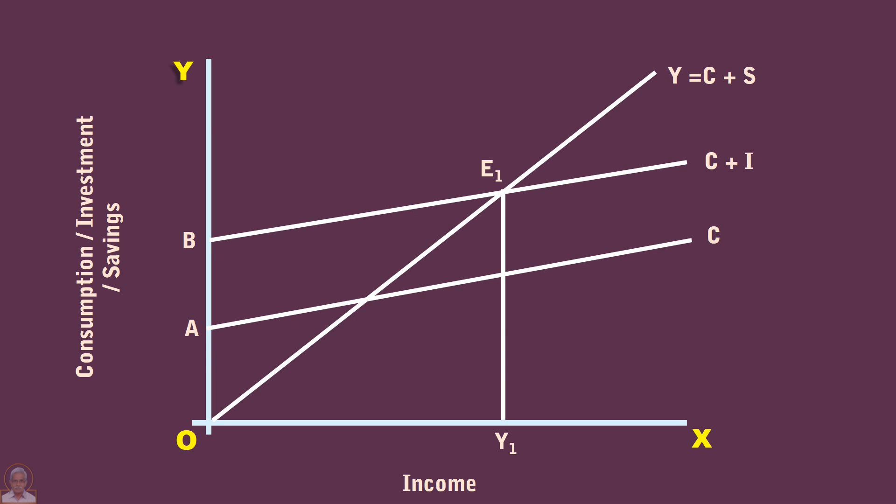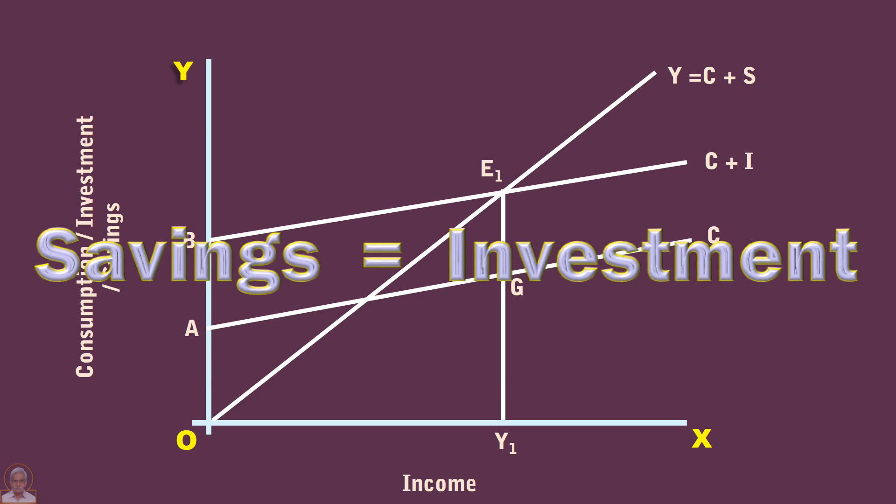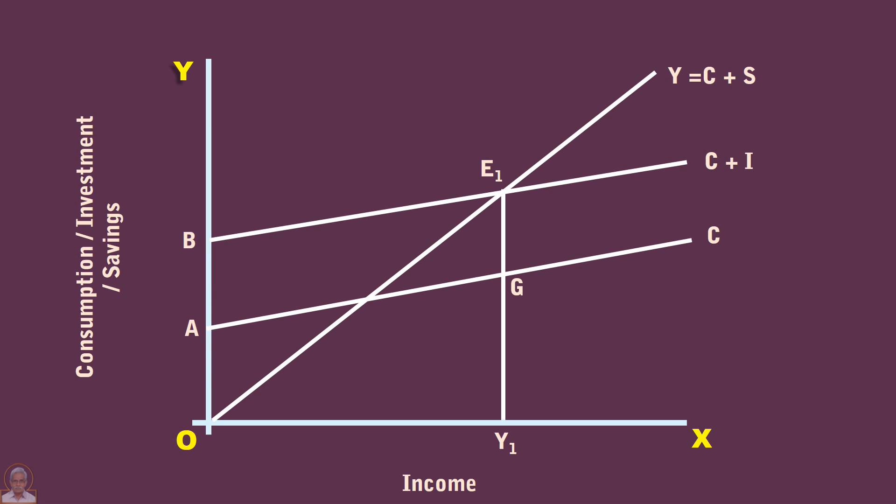Moreover, the community's planned consumption spending is Y1G. The community's planned savings is GE1. The community's planned investment is also GE1. Hence, savings is equal to investment. No other income level will bring about such equality.